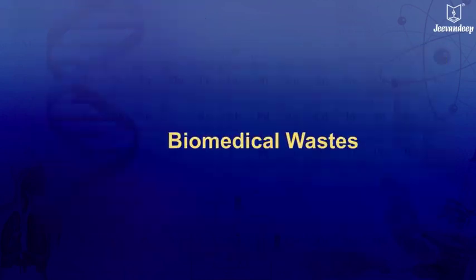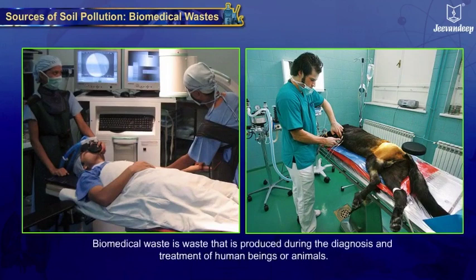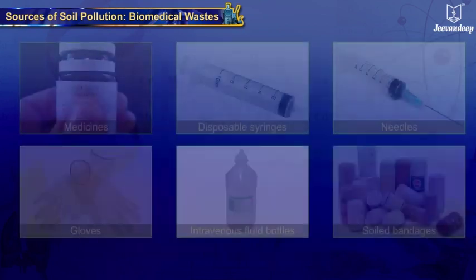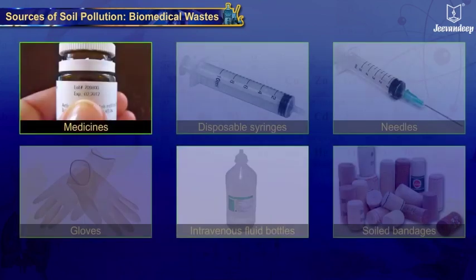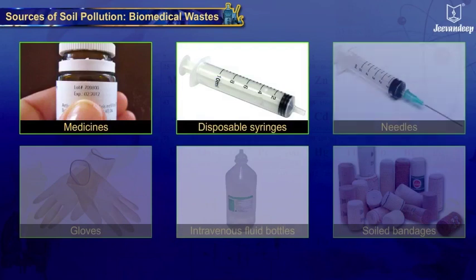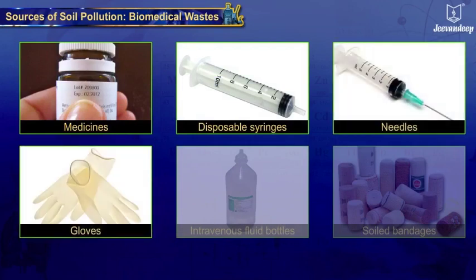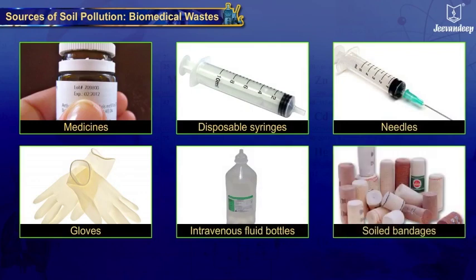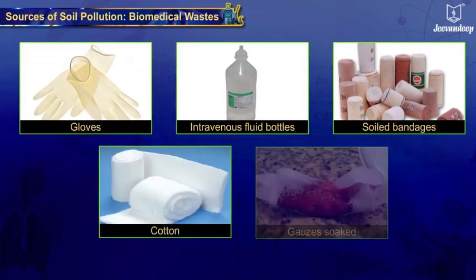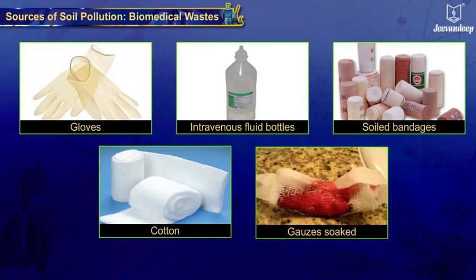Biomedical waste — biomedical waste is waste produced during the diagnosis and treatment of human beings or animals. It includes expired medicines, disposable syringes, needles, gloves, intravenous fluid bottles, soiled bandages, cotton and gauzes soaked in blood and other body fluids. These are hazardous and can spread diseases.